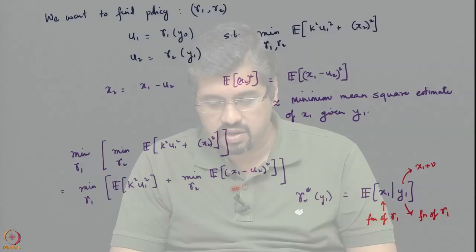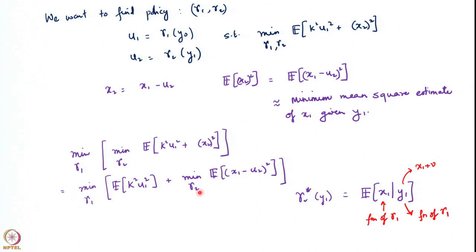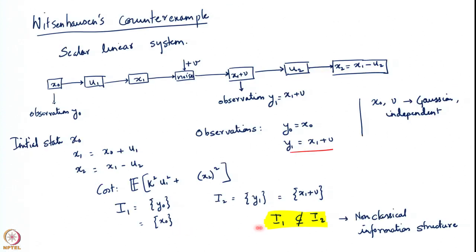The first controller can influence the information of the second controller because he can influence y_1. But the second controller does not have access to y_0, which is the information with the first controller when he is choosing his action. This essentially comes down to the highlighted inequality that i_1 is not a subset of i_2. This is the core dilemma going on in this particular problem.